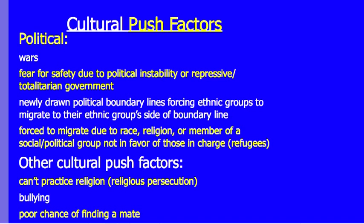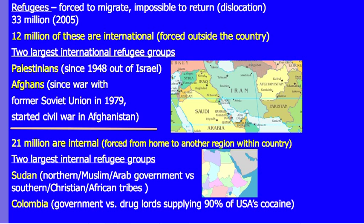Refugees are people forced to leave because they fear for their safety and cannot return. They are often displaced for years, sometimes forever. As of 2005, there were 33 million refugees worldwide: 12 million were international, forced outside their country, and 21 million were internal, forced to move to another region within their own country.